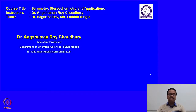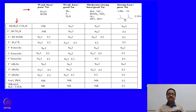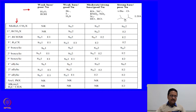Welcome back to the course entitled Symmetry, Stereochemistry and Applications. In the last few lectures we were discussing about various reactions like substitution and elimination reactions, and we discussed different reaction mechanisms. In the last lecture we concluded with a slide listing the possible compounds on which substitution and elimination reactions can be conducted with different bases and nucleophiles, and what the most probable products would be, including competition between SN1 and E1, or SN2 and E2. We would now try to see these variations using a few examples.